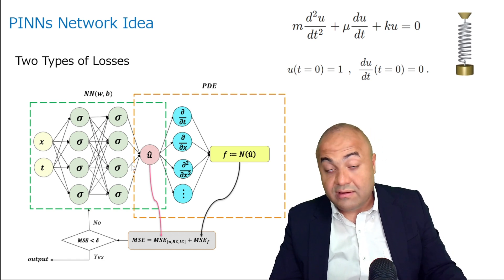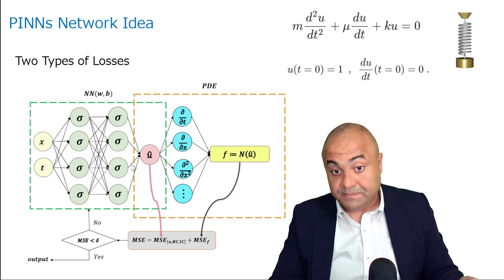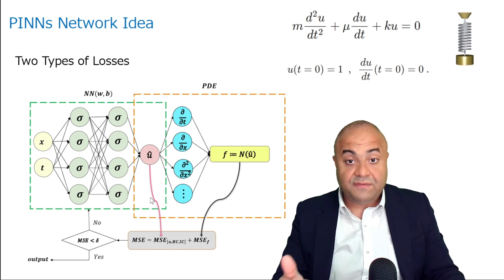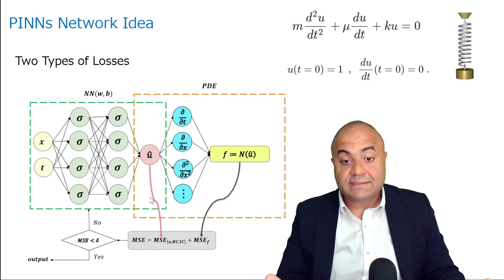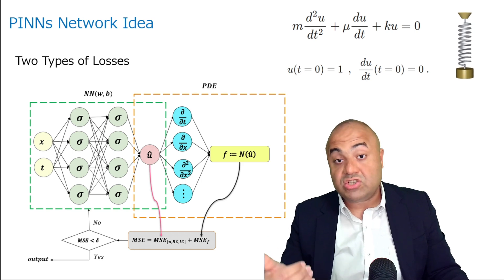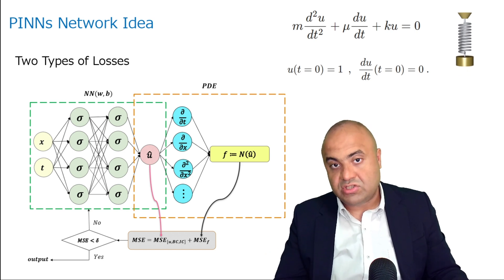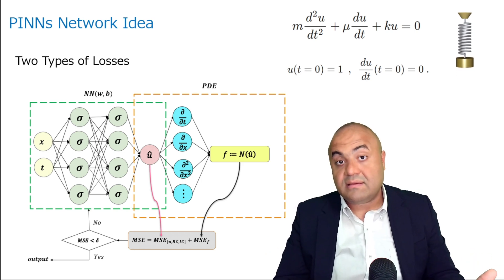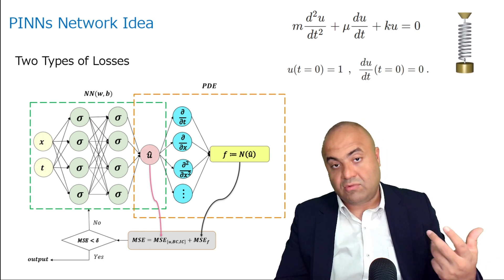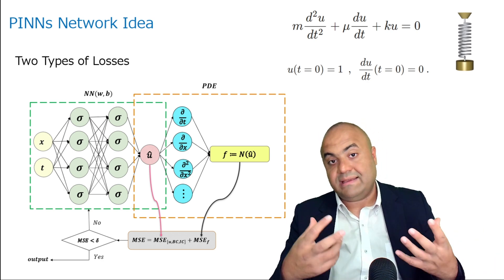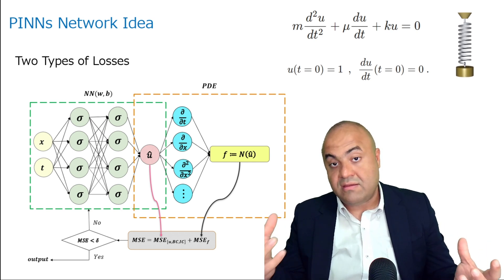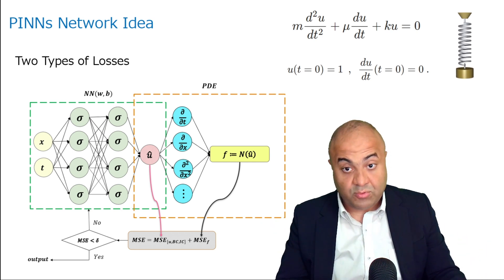In PINNs we have two kinds of losses. The first is the boundary condition and initial condition loss. The second is the physics loss, also called the function loss — basically the loss that makes the neural network comply with the physics of the problem.